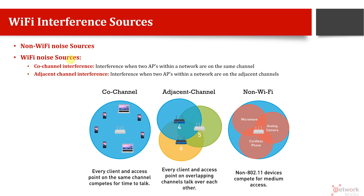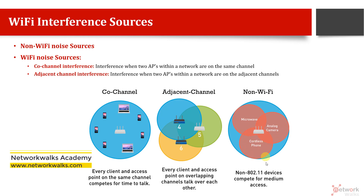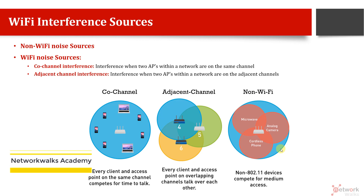Non-Wi-Fi sources means other devices like microwaves, cameras, and cordless phones are creating problems with our Wi-Fi network. These non-Wi-Fi sources include microwaves, analog cameras, cordless phones, baby cameras, Bluetooth devices, and garage openers.